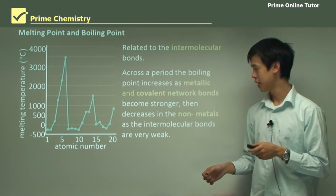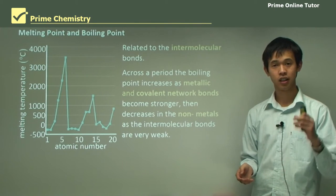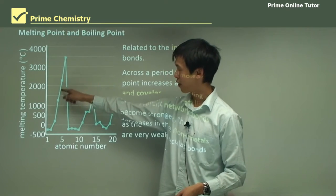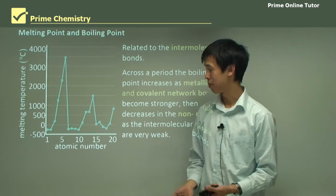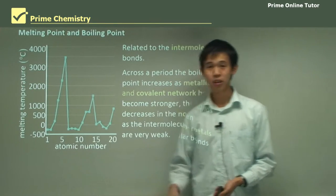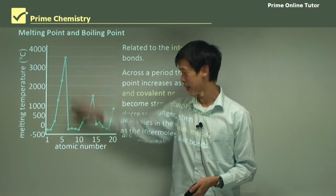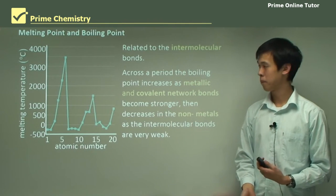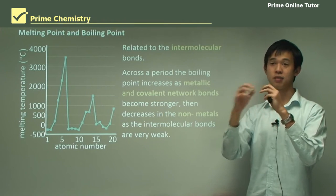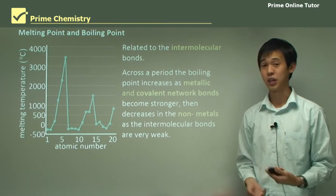But then something interesting happens when we hit the non-metals — we get very weak intermolecular forces and so we get a very substantial decrease in melting and boiling point. If you look at this graph, we can see a very sharp increase in boiling points and melting points as we move from atomic number one to atomic number five. But then once we hit six, which is carbon, or seven, we suddenly spike downwards because we've suddenly turned into a gas. It's because of these very weak intermolecular forces — O2 molecules don't bond to other O2 molecules, they just whizz around, so there's no real way to keep them together, giving a very low melting and boiling point.